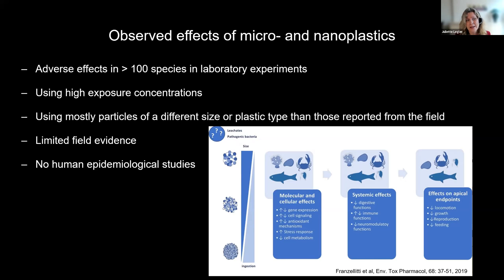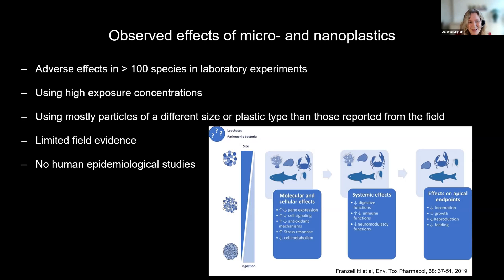Research in humans is sort of lagging behind. If we look at all of the studies that have come out — we're talking about thousands of studies — there have been adverse effects found in over 100 species in various laboratory experiments. The thing with laboratory experiments is that they tend to focus on one or two specific plastic types and tend to use high exposure concentrations to first understand the hazard. This leads to really limited field evidence of environmentally relevant micro and nanoplastics, and actually no human epidemiological studies have been done yet, due to many challenges in this field.